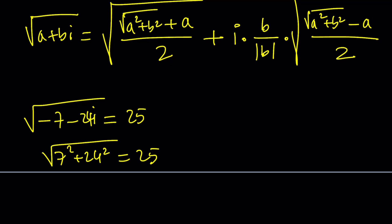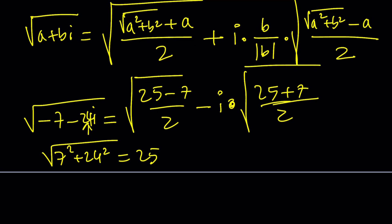We have the 7, 24, 25 triangle, so this is 25. I mean the absolute value is 25. So now we're going to plug it in here. It's going to be the square root of 25 plus a, which is minus 7, divided by 2, plus i times. By the way here, b is negative so I have to use a minus sign. Let's put a minus sign here. And multiply this by the square root of 25 plus 7 over 2. This is 9, square root of 9 is 3. This is 16, square root of 16 is 4.